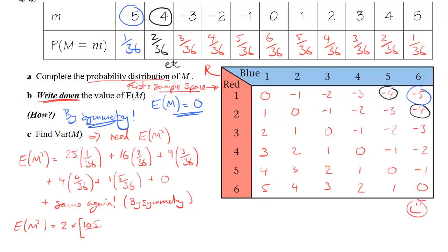So, 2 times 105 over 36 is how it works out. That's why it was useful to keep 36 as the denominator. It makes it very easy to add them. That becomes 35 sixths. And therefore, I can work out the variance using my formula. So, it's going to be E of x squared, or rather m squared, minus E of m squared. The expected value of m squared, we just worked out, is 35 over 6. The expected value of m, we did in part b, and that's 0. So, my variance is simply 35 over 6. That's part c done. That's this lesson done.